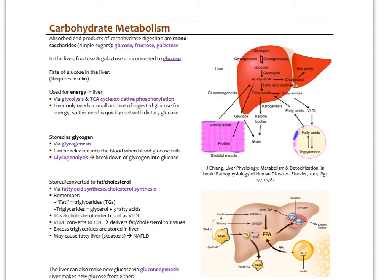Let's review carbohydrate metabolism. After the digestive process we should only be absorbing monosaccharides across the enterocytes — either glucose, fructose, or galactose. That's the end product of breaking down all your carbohydrates. In the liver, fructose and galactose are converted to glucose. So glucose is really our central molecule of carbohydrate metabolism. The fate of glucose in the liver has three different roles, and all of these require insulin.